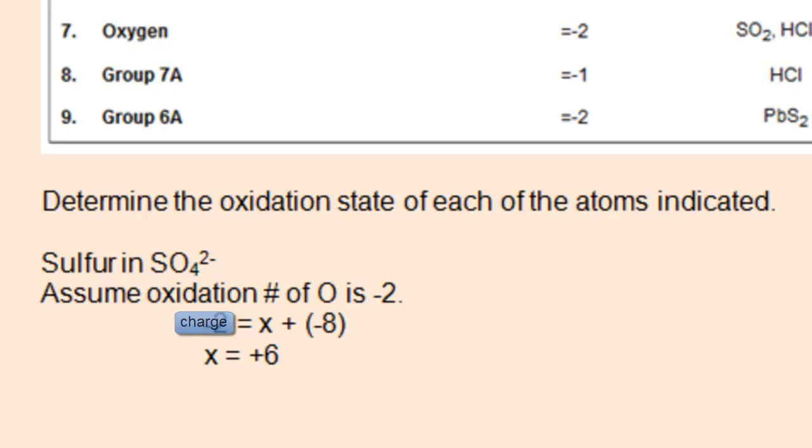The negative eight comes from four oxygens. Four times negative two would be negative eight. The x is the oxidation number of sulfur. The negative two is the charge of the polyatomic ion. So the sum of the oxidation numbers of the individual atoms must be equal to negative two. Solve for x, you'll find that x is positive six. Therefore, the oxidation number of sulfur in sulfate is positive six.